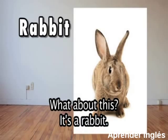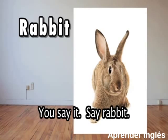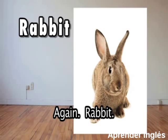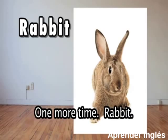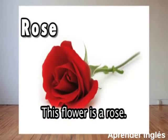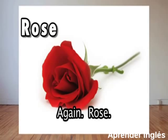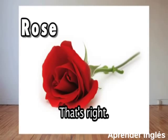What about this? It's a rabbit, rabbit. You say it, say rabbit. Again, rabbit. One more time, rabbit. Yes, that's right. This flower is a rose, rose. Say rose. Again, rose. That's right.